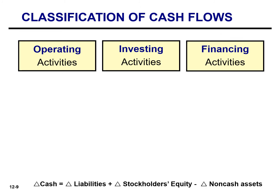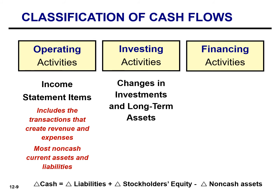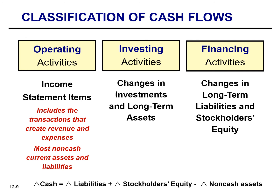Any transaction that changes cash must be accompanied by a change in liabilities, stockholders' equity, or non-cash assets. So we follow general guidelines when preparing the statement of cash flows. Operating activities involve income statement items such as net income and depreciation, and we also look at changes in non-cash current assets and liabilities such as accounts receivable and accounts payable. Investing activities involve cash flows resulting from changes in investments and long-term assets such as property, plant, and equipment. Financing activities involve cash flows resulting from changes in long-term liabilities as well as stockholders' equity accounts.